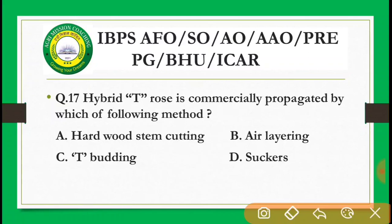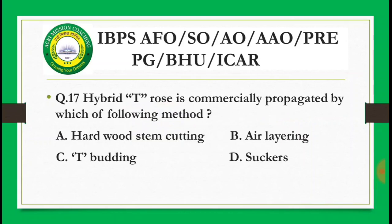Next question: Hybrid tea rose is commercially propagated by which method? Options are: hardwood stem cutting, air layering, T-budding, and grafting. All are important questions frequently repeated in exams — please note them down for practice. The correct answer is T-budding — hybrid tea rose is commercially propagated by T-budding.